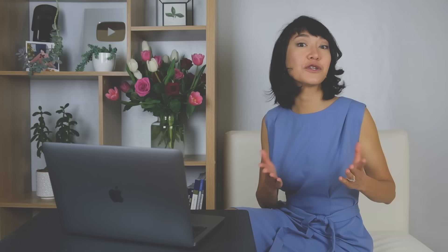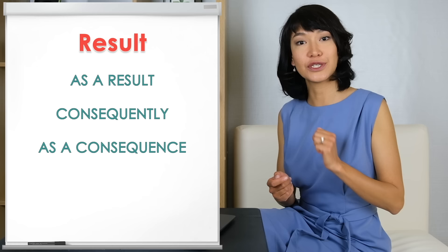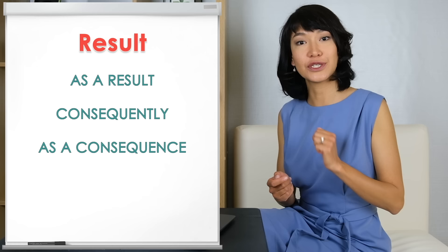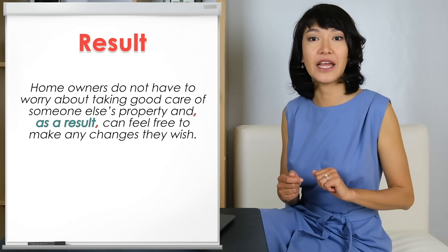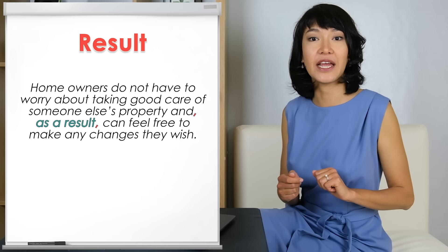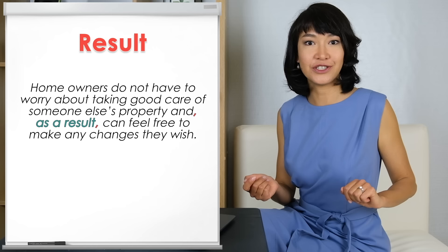I'd like to share important linking words that either show the result or consequence of something, or explain the cause. Let's take consequences first. One good way to show this connection is to use AS A RESULT. But there are some others: consequently, as a consequence, therefore, or thus. Here is an example: 'Homeowners do not have to worry about taking good care of someone else's property and, as a result, can feel free to make any changes they wish.' Here I am comparing those who buy their home to those who rent one.